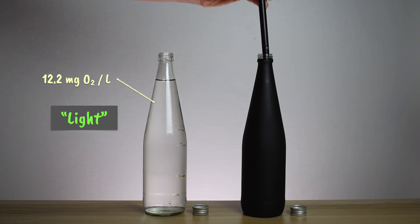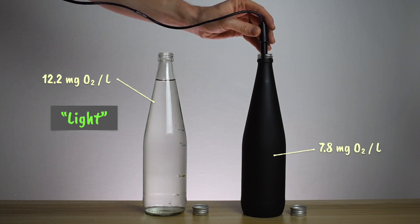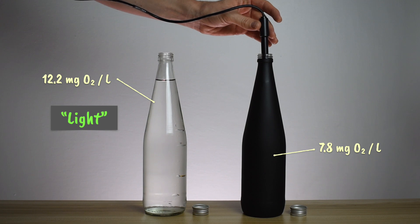Next, do the same for the dark bottle. Here, we've got 7.8 milligrams of oxygen per litre. We'll call this value dark.